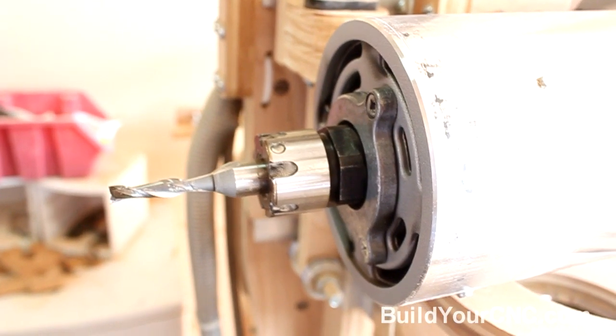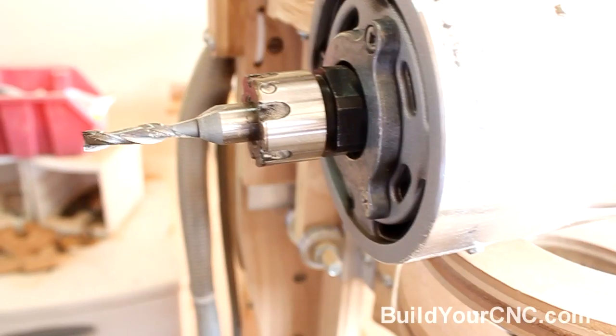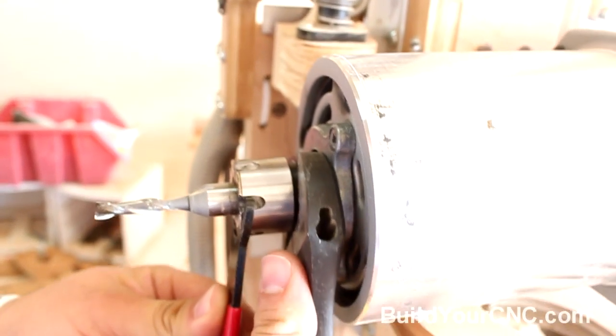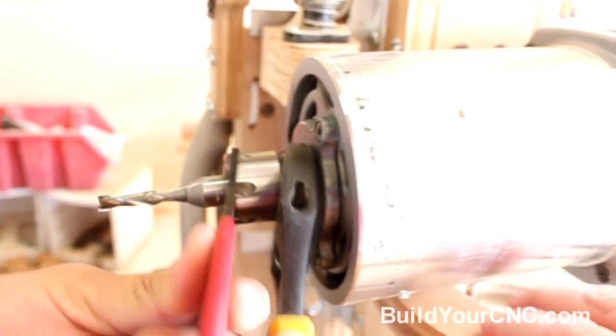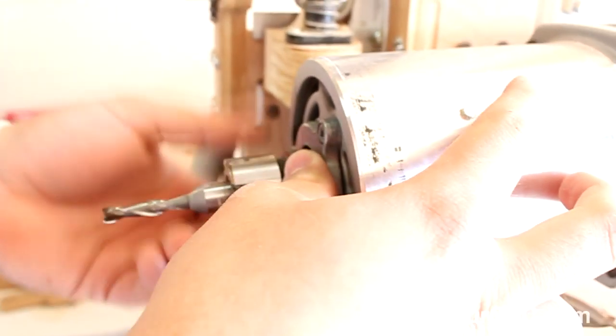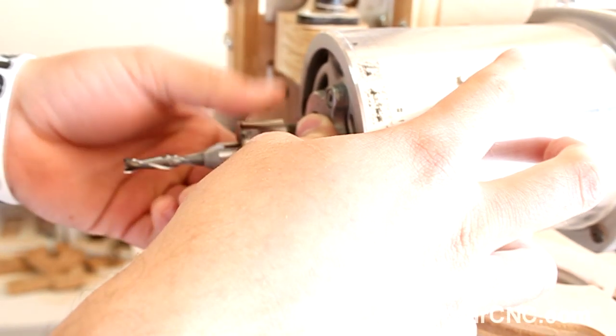We'll be removing the collet nut with a spanner wrench and a crescent wrench for this part of the router. Be careful because the router is on a non-stable surface so you want to make sure that this doesn't move and fall. Also make sure that the router is unplugged and turned off.